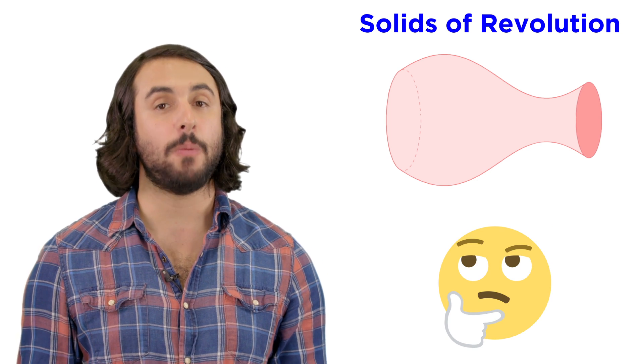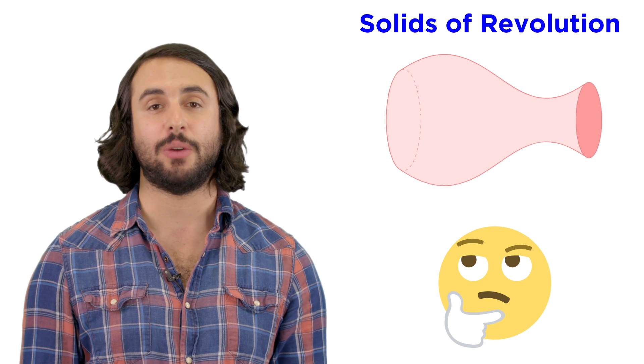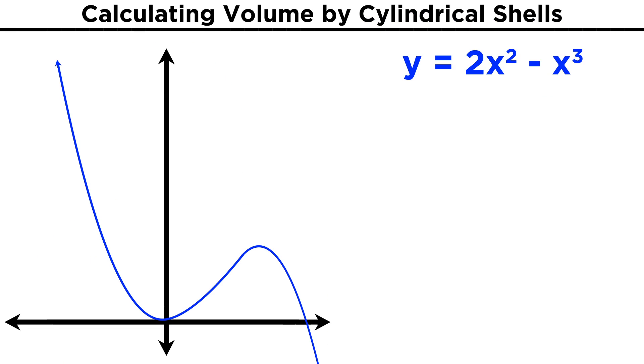Sometimes it won't be so easy to use this method, so let's look at an example where another method will be a better approach. Take for example y equals two x squared minus x cubed. The region between this function and the x axis looks like this.